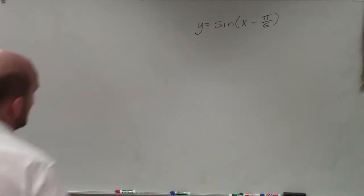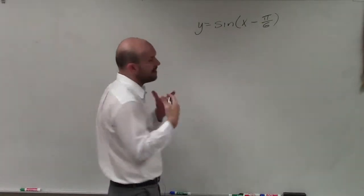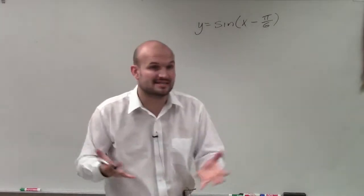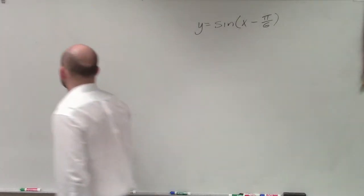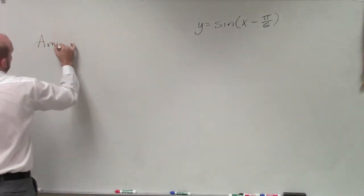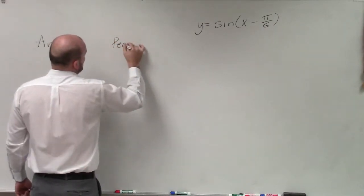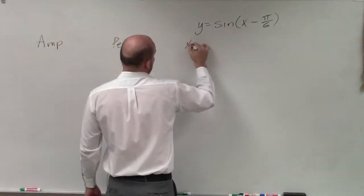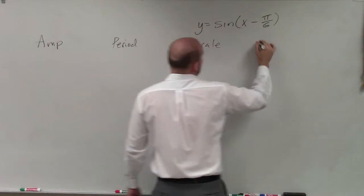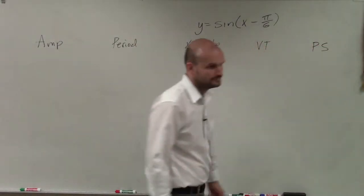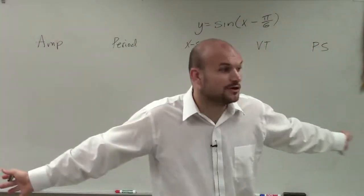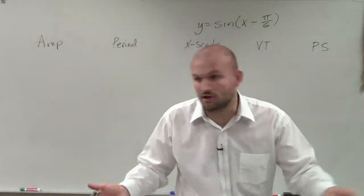So to graph y equals sine of x minus pi over 6, the first thing I want to do is get as many points as possible. So the first thing I'm going to do is determine my amplitude, my period, my x scale, my vertical transformation, and my phase shift. So we have to go and do that. So we might as well go and get all this done.